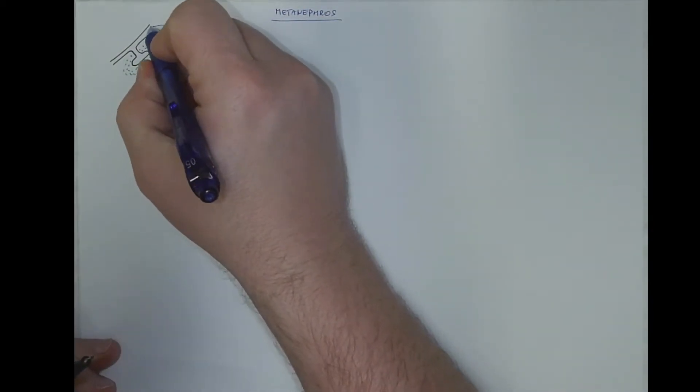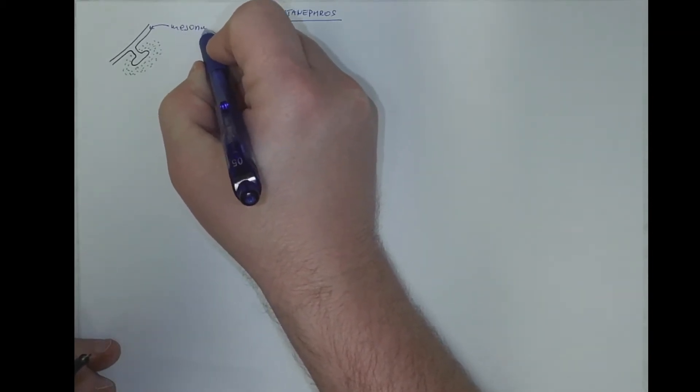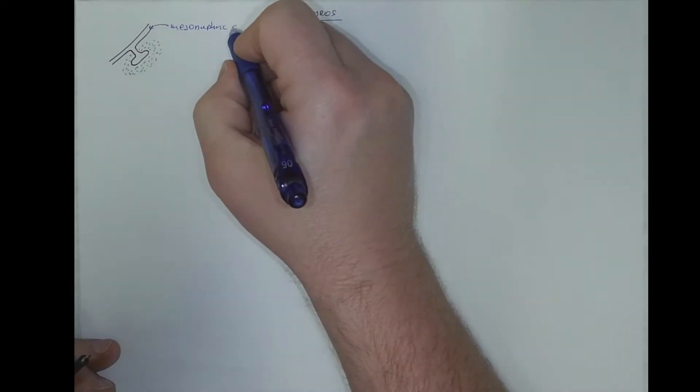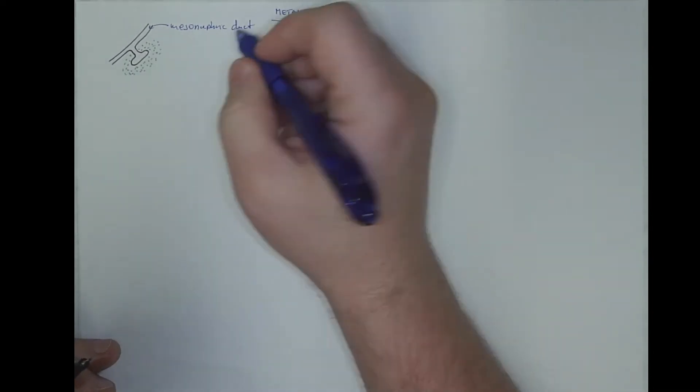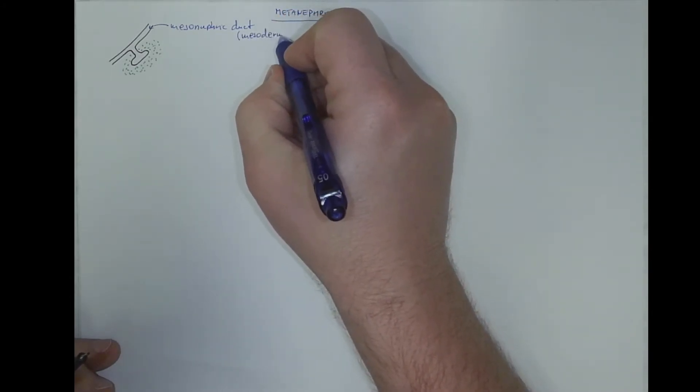So this is the mesonephric duct, the Wolffian duct also, which is derived from the mesoderm.